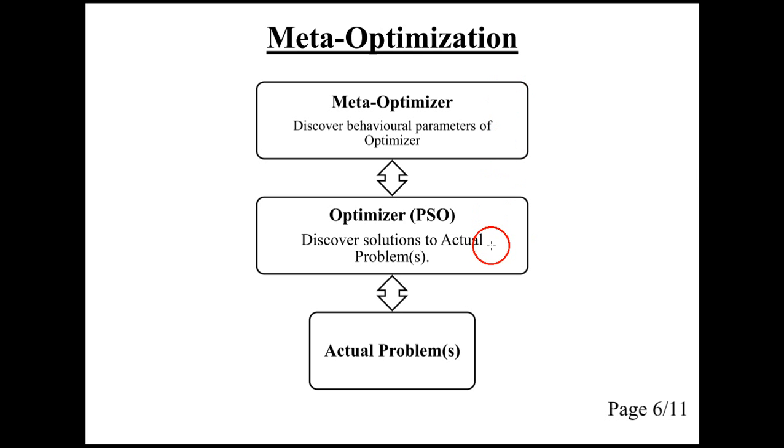So the idea is that the meta-optimizer generates parameters, sends them down to the PSO, which performs a number of optimizations on the problems that we're interested in. The results get sent all the way back up to the meta-optimizer, which uses the results to find out a new set of parameters for the PSO to try out. And this continues a number of times until we have found a good enough choice of parameters for the PSO.